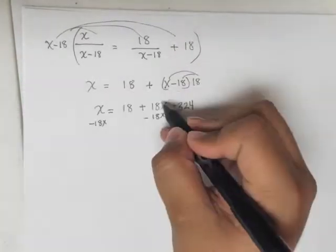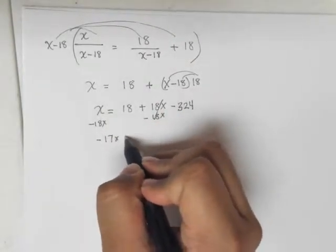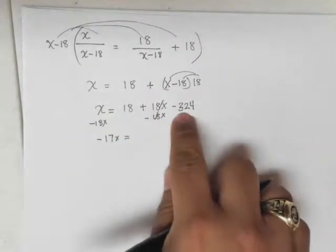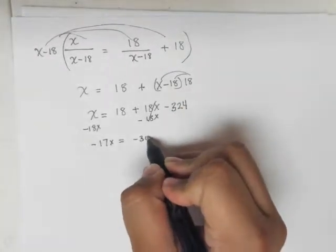All right, I move this to the other side. That's good. This cancels. Negative 17x equals—what's 18 minus 324? That looks like it's negative 306.